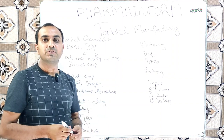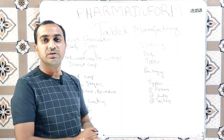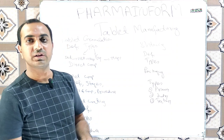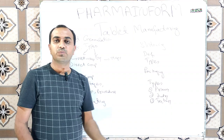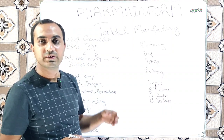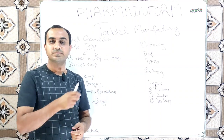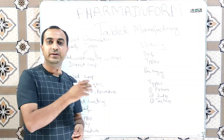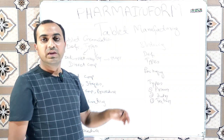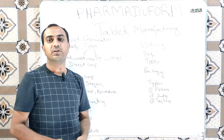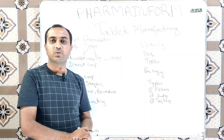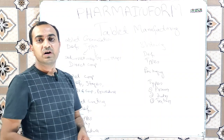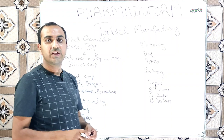First, let's start from tablet granulation. What is the definition of granulation? The process in which powder particles are converted into large agglomerates by using solvent, binder solution, or pressure is known as granulation. There are two types: wet granulation and dry granulation. Wet granulation is used for products which are not degraded by moisture and not degraded by heat. Dry granulation is the process in which fine powders are converted into large agglomerates by application of pressure — used for heat-sensitive and moisture-sensitive products.